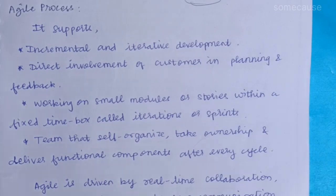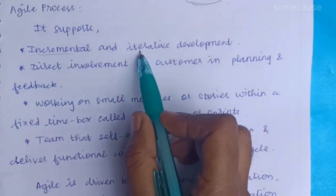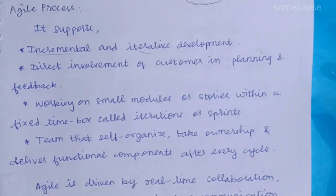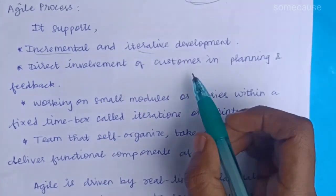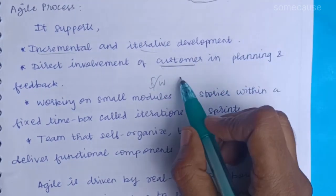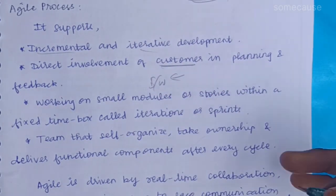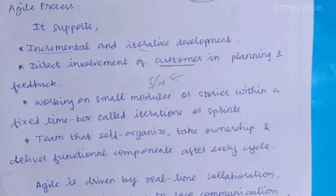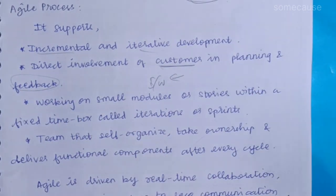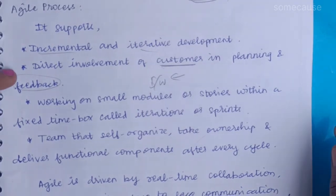Agile Process is incremental and iterative development. If we are doing a process, the process is going to be an iterative approach. Second, this is a very important issue: customer feedback. If we are doing software, the client is the customer — involvement — they are directly involved. If we are doing any changes, we gather feedback from the customer.